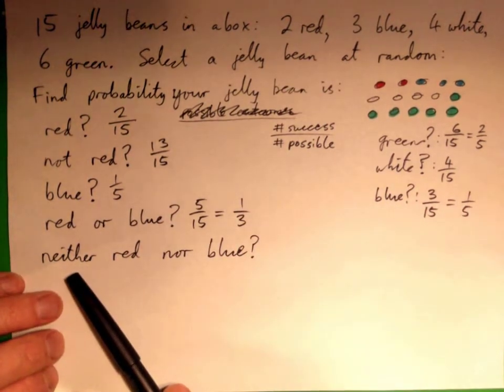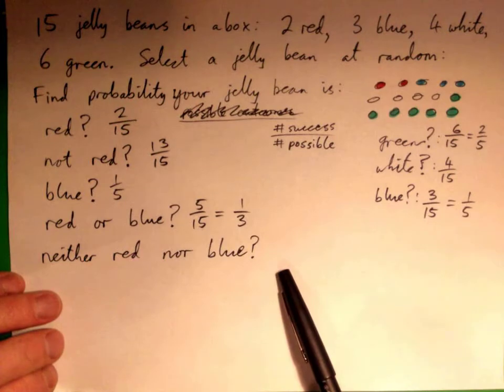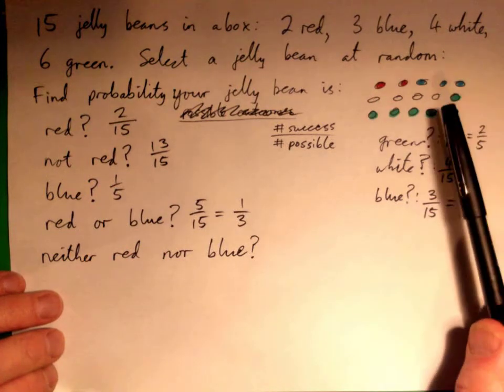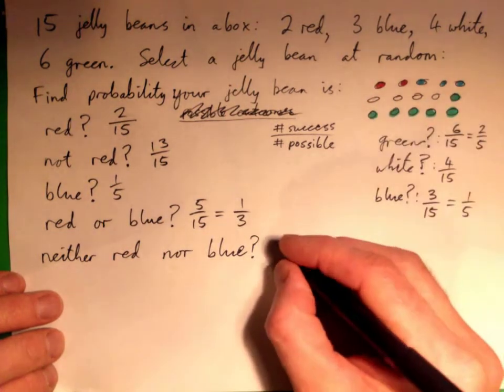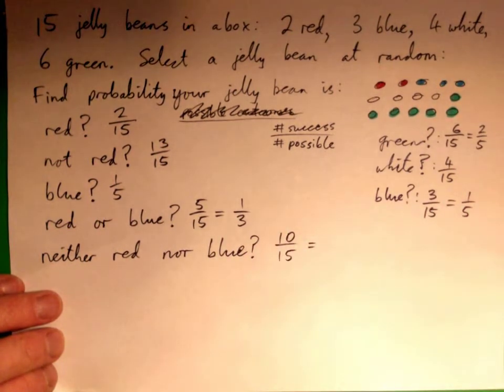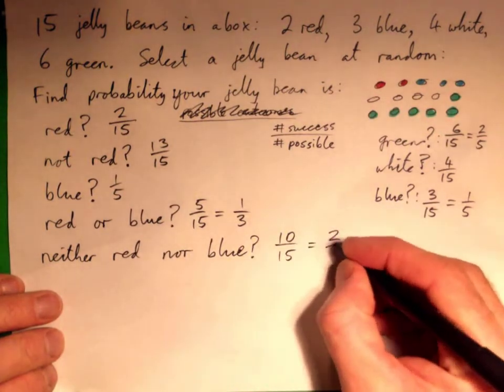What's the probability it's neither red nor blue? Correct, because it could be either the whites or the greens, so that's just ten out of fifteen. And how do you simplify that? Two-thirds, perfect.